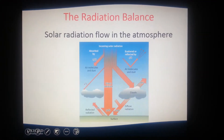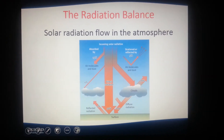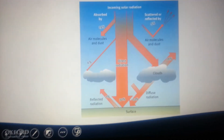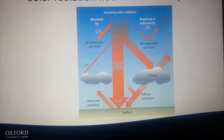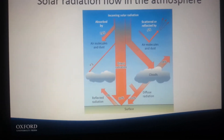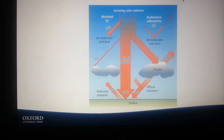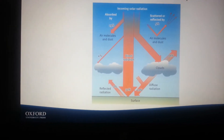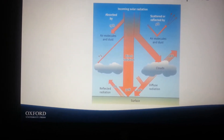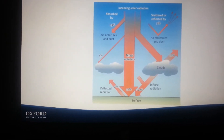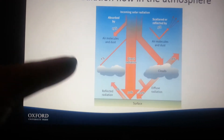And the radiation balance — the radiation flow in the atmosphere: 19% absorbed, 5% scattered or reflected, 32% direct, 7% reflected, 22% diffuse, and 18% reflected by clouds.